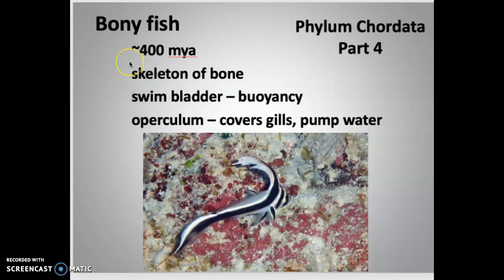Bony fish evolved around 400 million years ago. We see skeletons of bone, the swim bladder which gives them buoyancy, and that operculum that covers their gills and helps pump water.